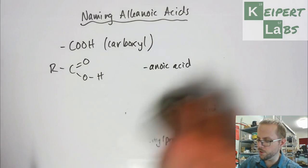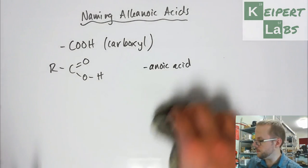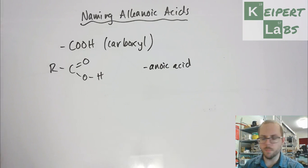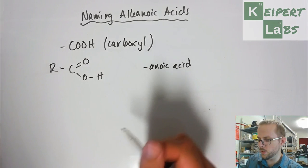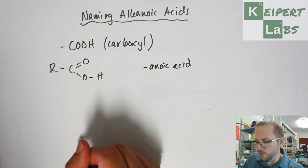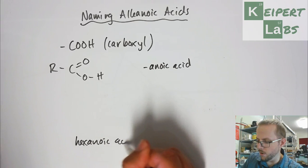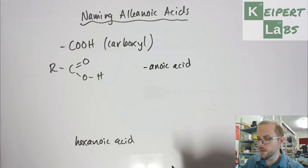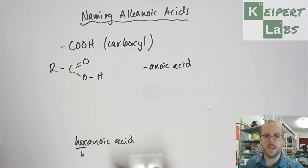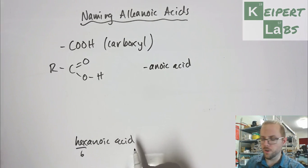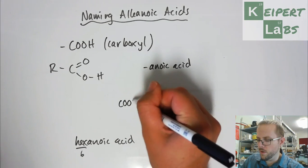Just to finish up, I'm going to do an exercise in reverse, where I've been given a name and I'm going to build it from there. So I've got hexanoic acid. I'm told that's its name. I know from 'hex' that I'm talking about six carbons. And I know because it's an anoic acid that I'm going to have a COOH group on the end.